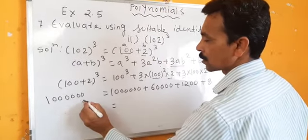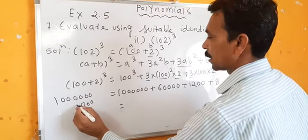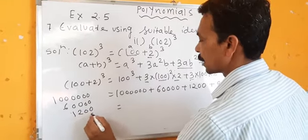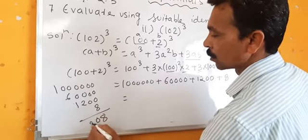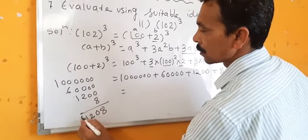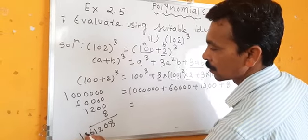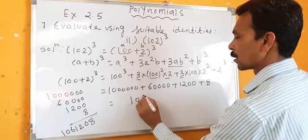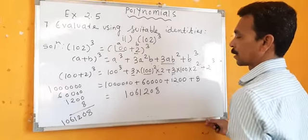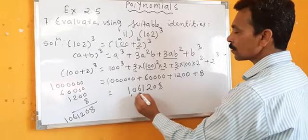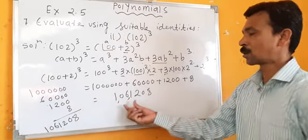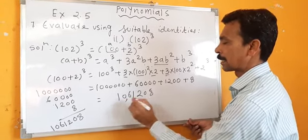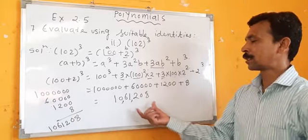Adding: 1,000,000 plus 60,000 plus 1,200 plus 8. The answer is 1,061,208, which means 10 lakhs 61 thousand 208.